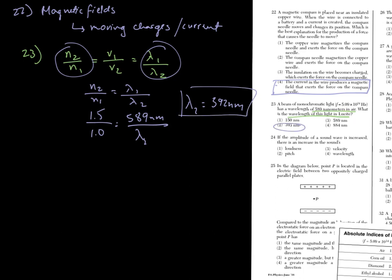Number 24. If the amplitude of a sound wave is increased, so think amplitude for sound is equal to volume. So there's an increase in the sound's loudness, so it just gets louder.